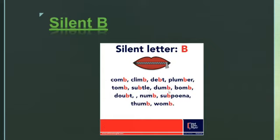'Dumb,' 'bomb,' 'doubt,' 'numb,' 'subpoena,' 'thumb,' 'womb.' In all these words, the letter B is not pronounced. So the letter B is silent here. We can call these words as having a silent letter B.